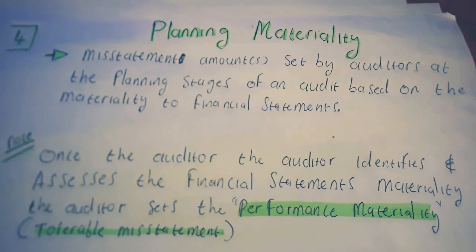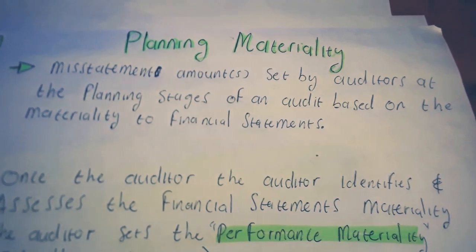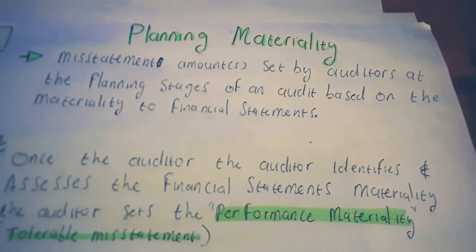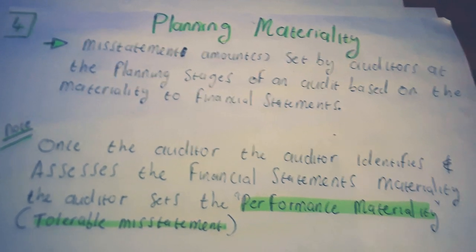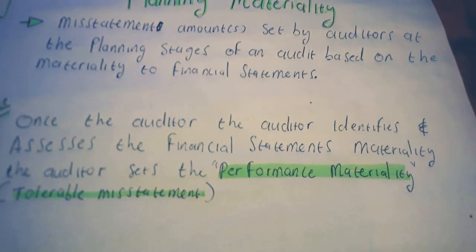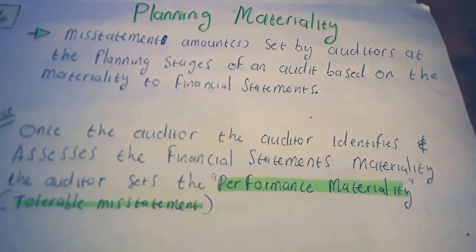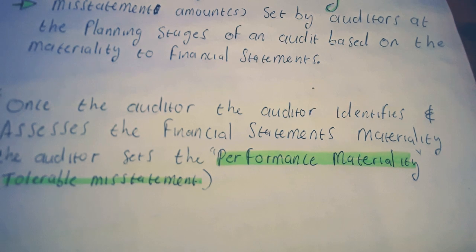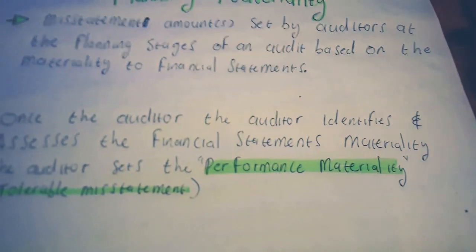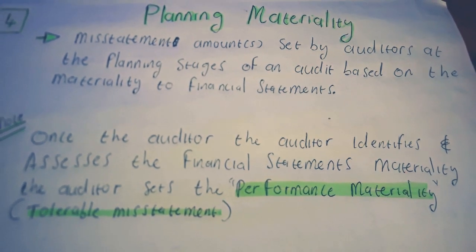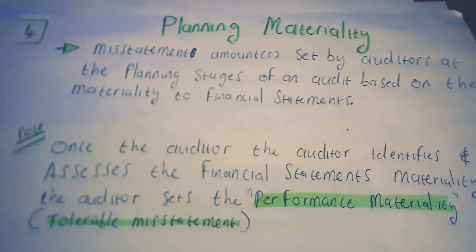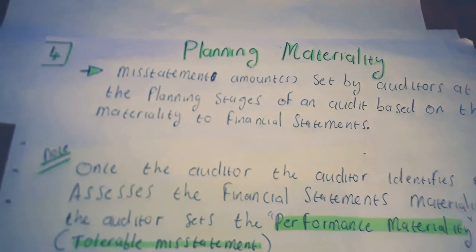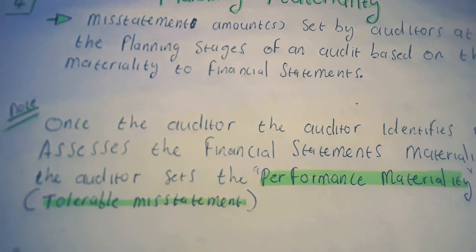Now that you know what materiality is, we need to go deeper. We have something called planning materiality — these are amounts which the auditor sets at the planning stages of an audit based on the materiality of the financial statements, reflecting what the auditor thinks will actually be material. Once the auditor identifies and assesses materiality, the auditor sets the performance materiality — in other words, the tolerable misstatements — things we can accept that will not impact the decision maker. For example, you can tolerate losing one rand if you have ten thousand rands, but losing 500 rands out of ten thousand may not be so insignificant.